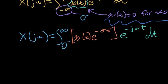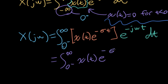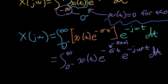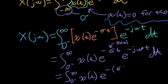Let's play with this a little bit more. We'll combine these exponents as we usually do. So I'm going to write it as x of t times e to the minus sigma t times e to the minus j omega t, dt. I should add the caveat that we're assuming the sigma here is real valued. If we combine these things together, I can write the integral with e to the minus, open parenthesis, sigma plus j omega, close parenthesis, times t, dt.